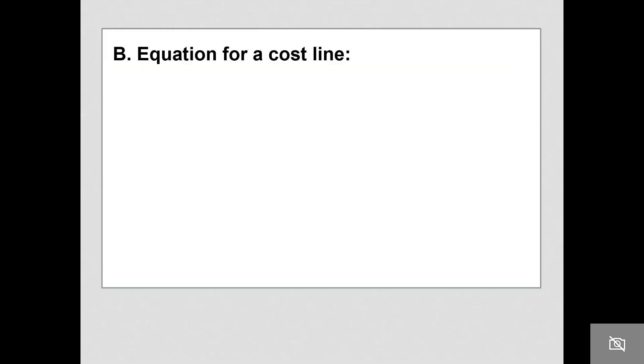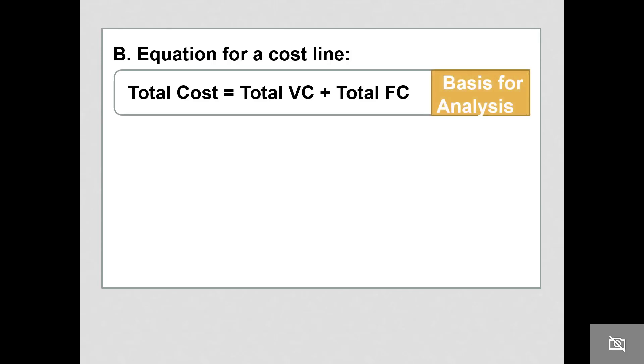The equation for a line is: total cost equals total variable cost plus total fixed cost. This is going to be the basis for our analysis.